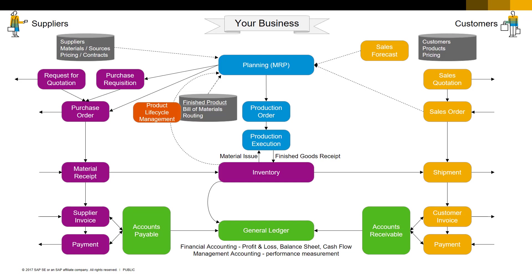And, even better, a good PLM system will help you keep track of changes to the bill of material over time, using a control document called an Engineering Change Order, or ECO. This change control ensures that your plant transitions from one revision of a product to the next in an orderly fashion, and that they're always building the correct version of the finished product.